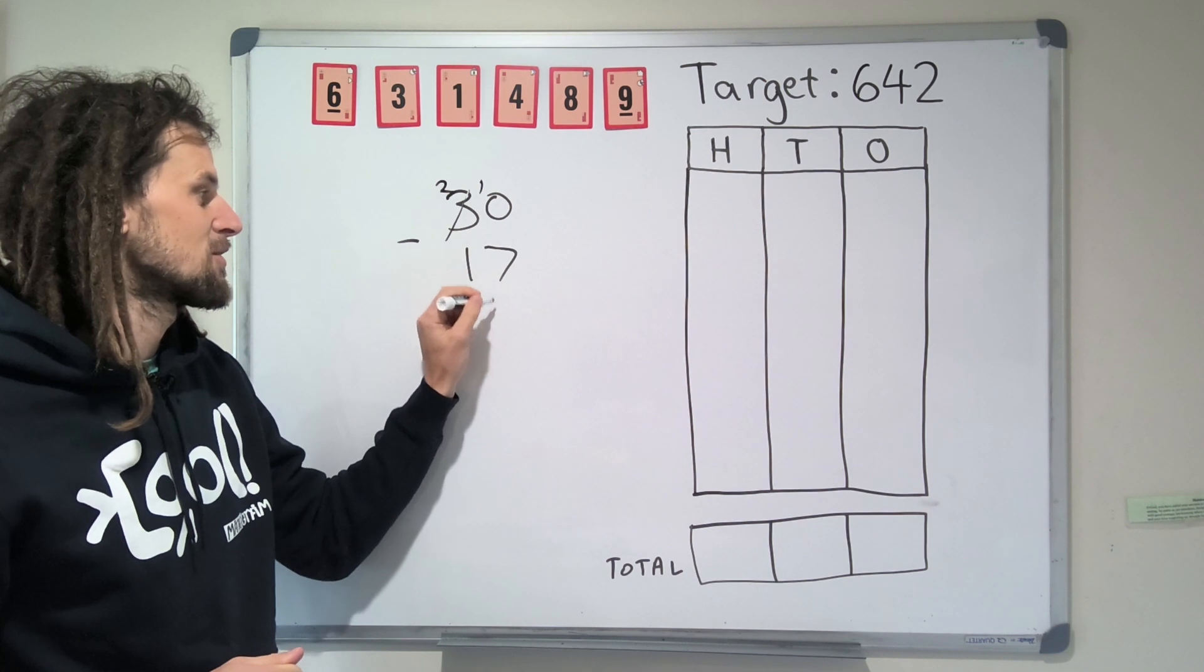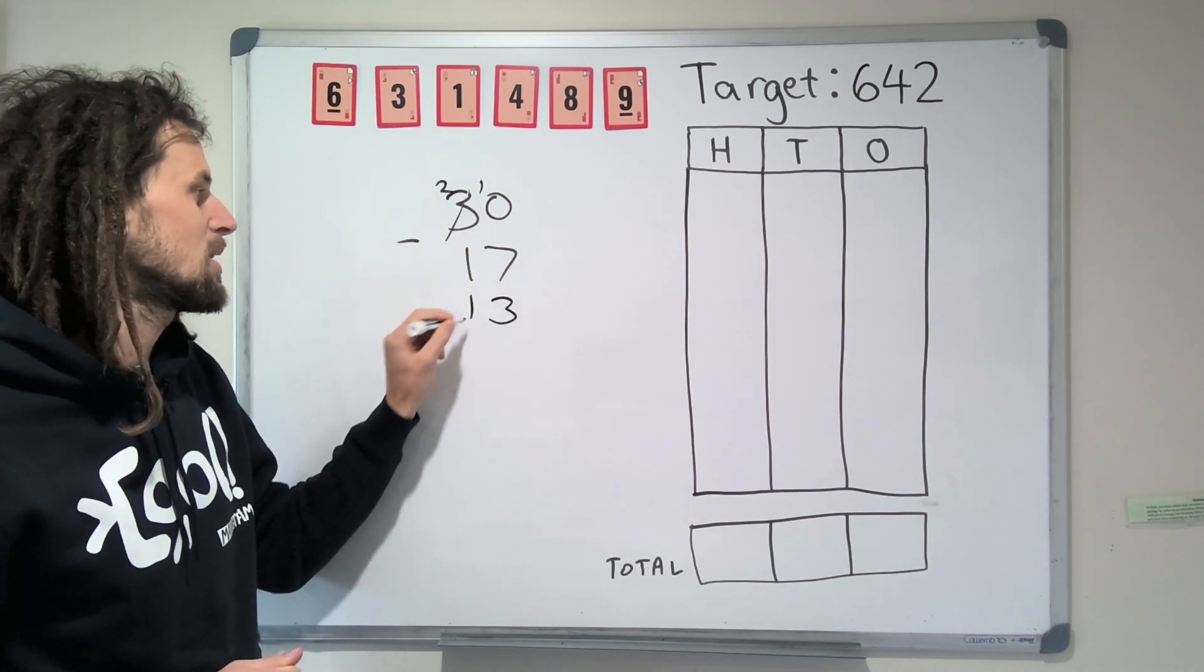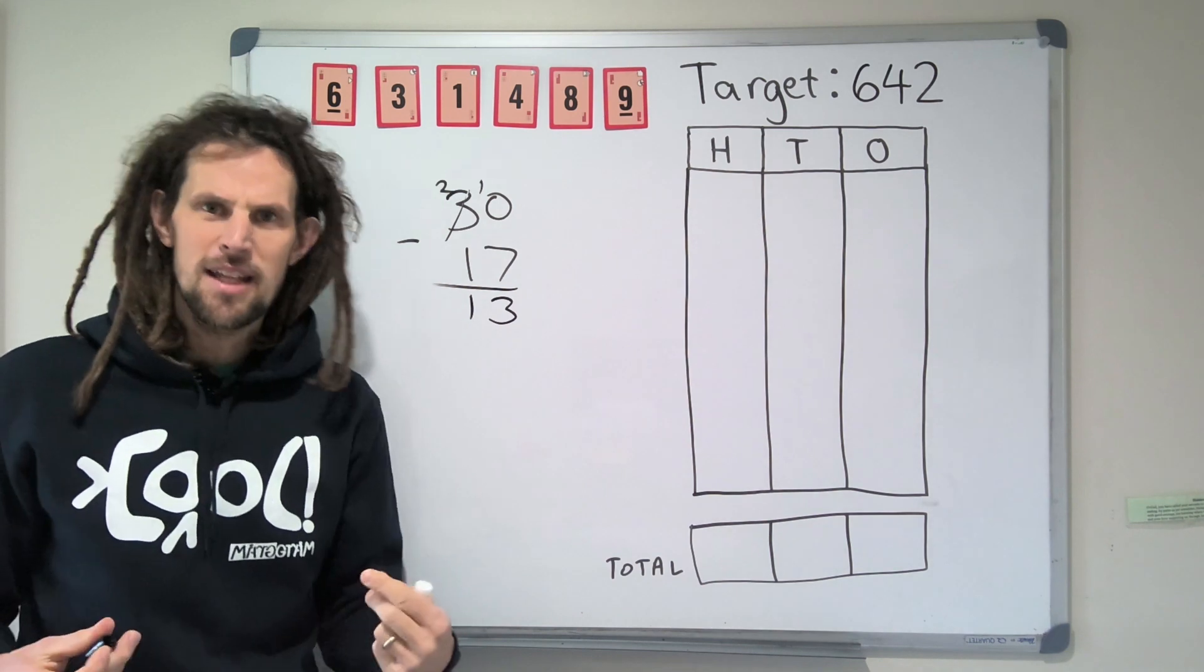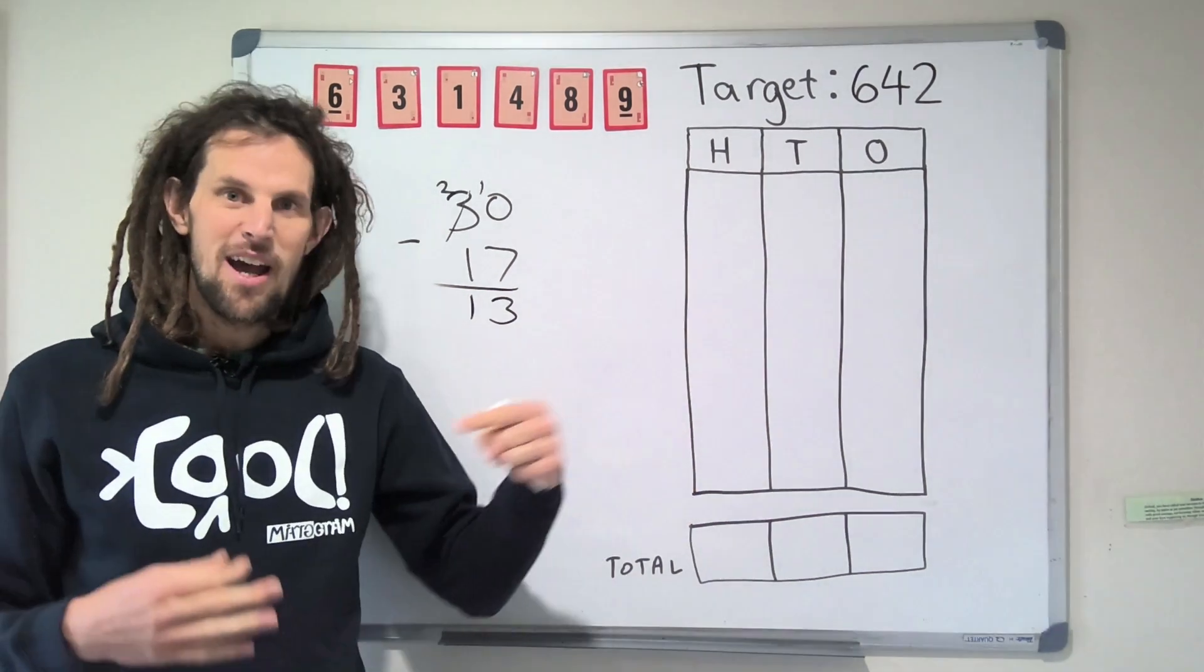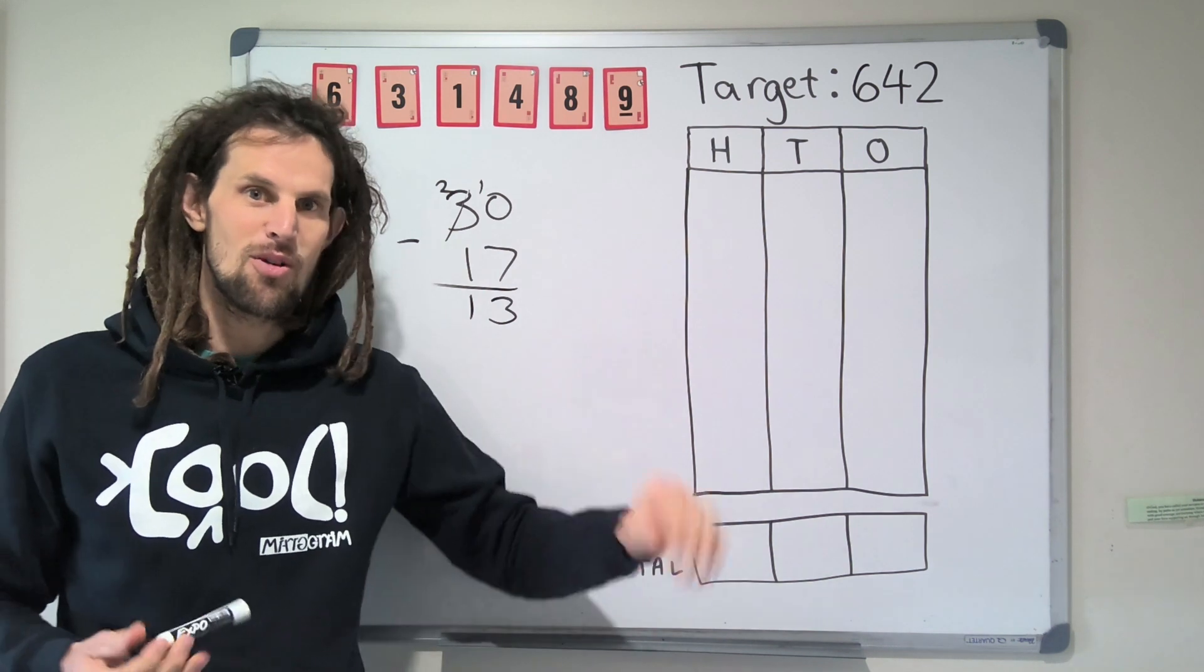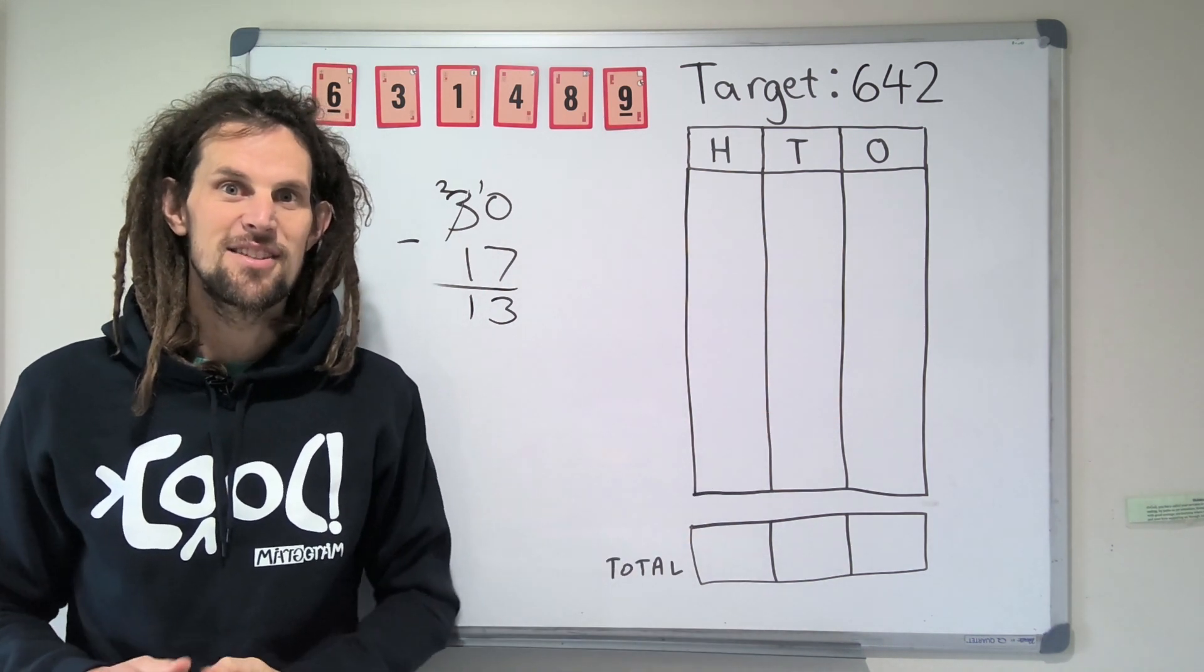And now we can take 7 from 10 and get 3, and we can take 1 from 2 and get 1. And so it's a really important skill, and I think we have to go back to it if we say, nah, you're wrong, it's 30, and we correct our kids too much.